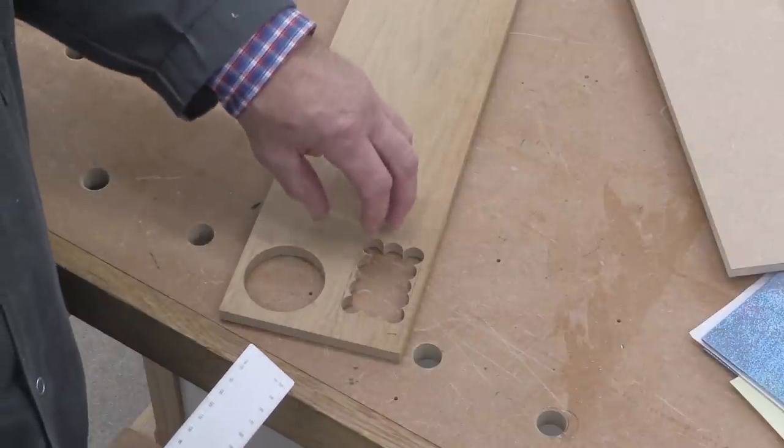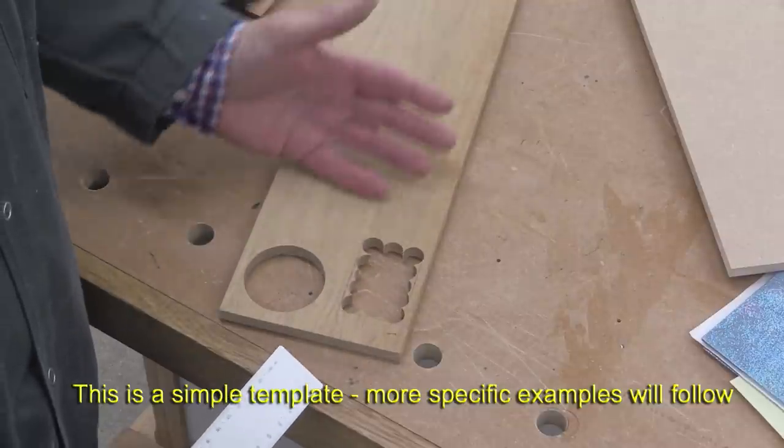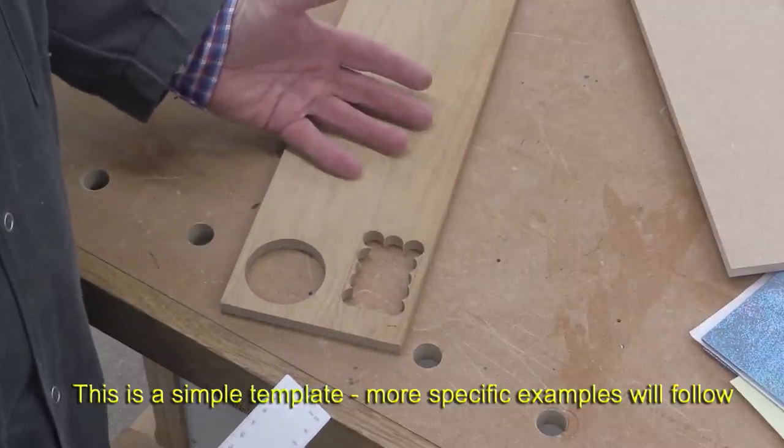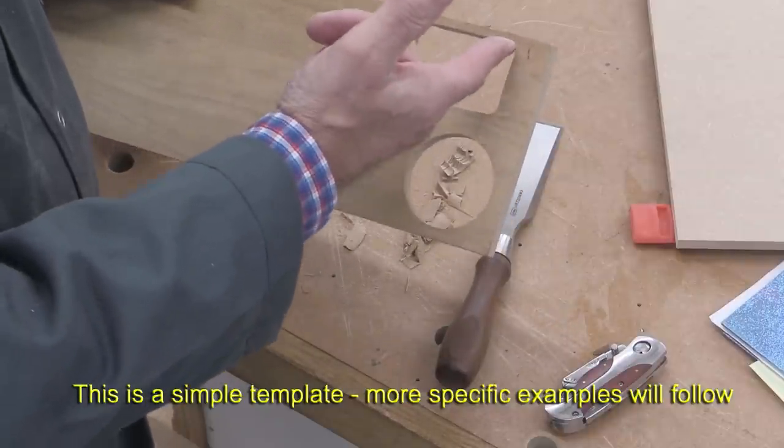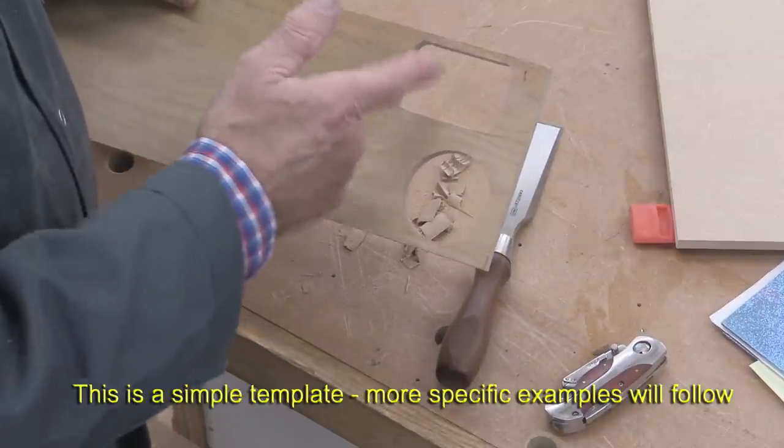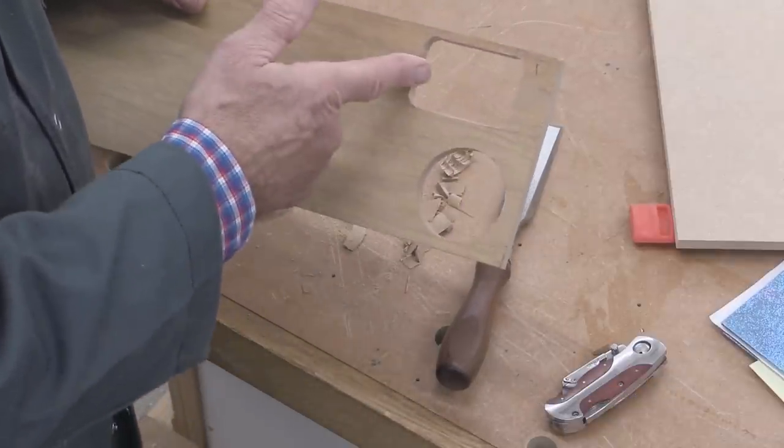Now, ordinarily, I wouldn't have a template right at the edge of a piece of material like this. I'd try and get it closer to the center, so you've got more clamping options. But I want to use this piece again and again. Now, I've finished it off as well as I need to because I won't be using this as a real template.